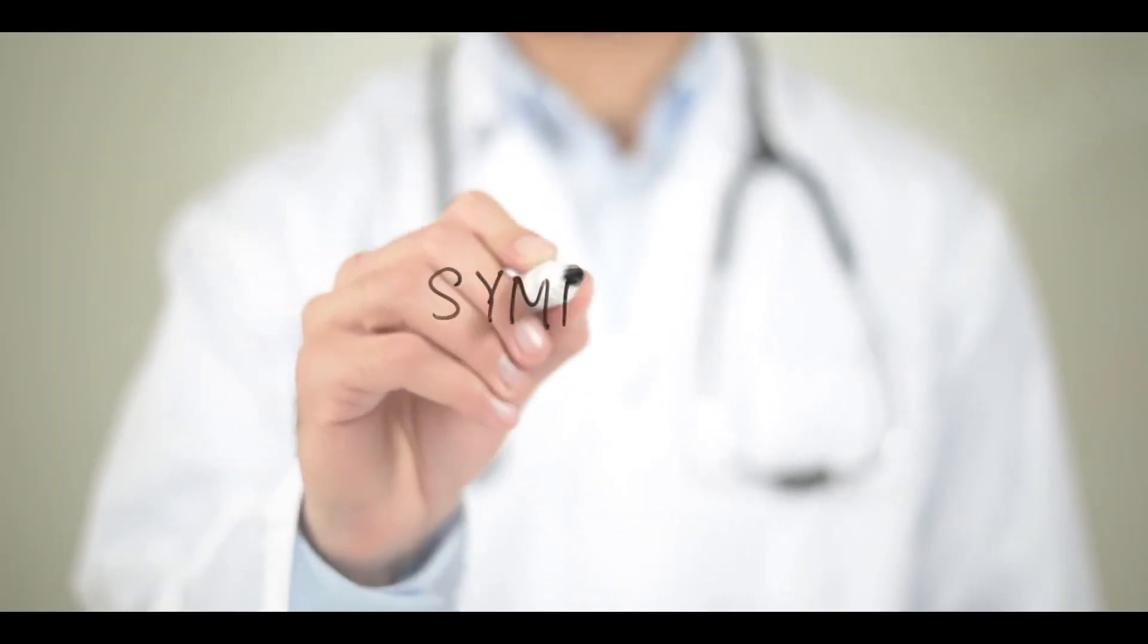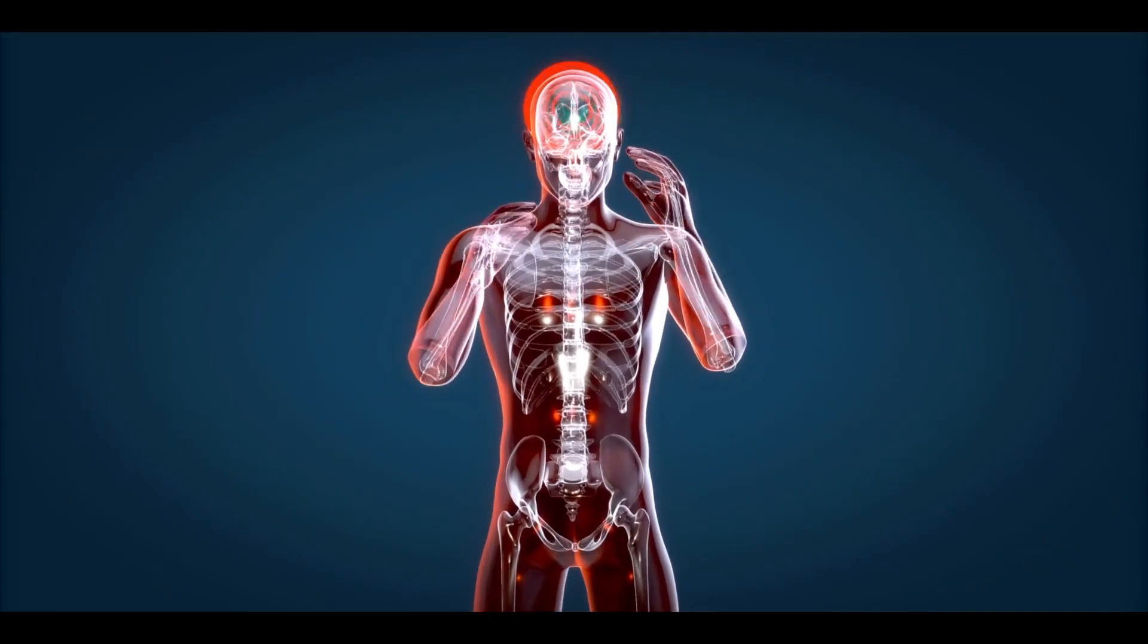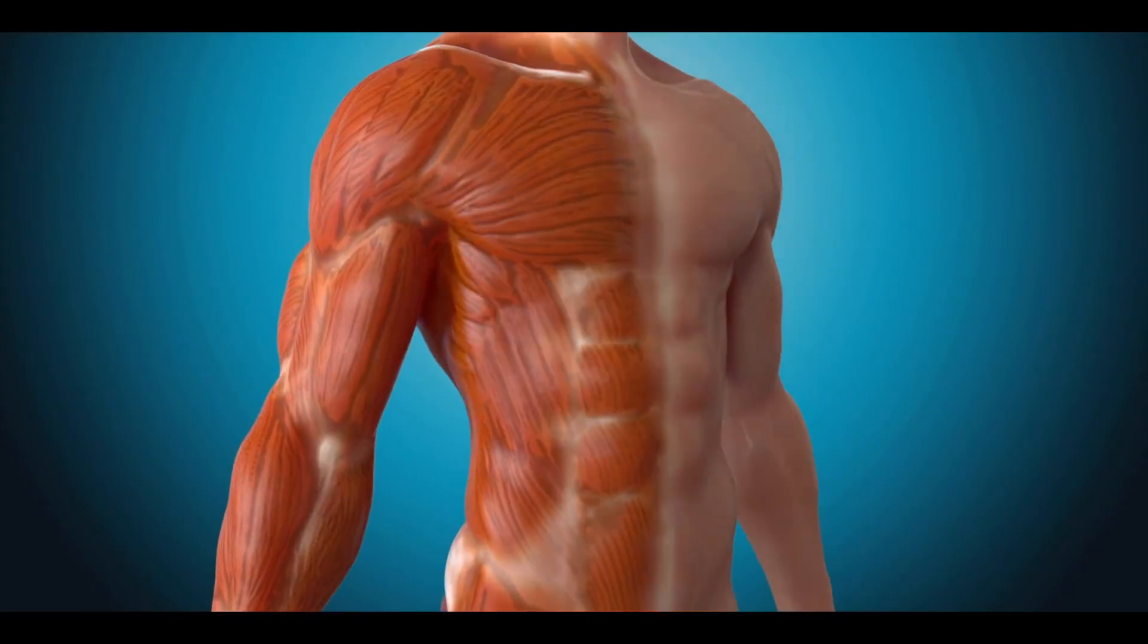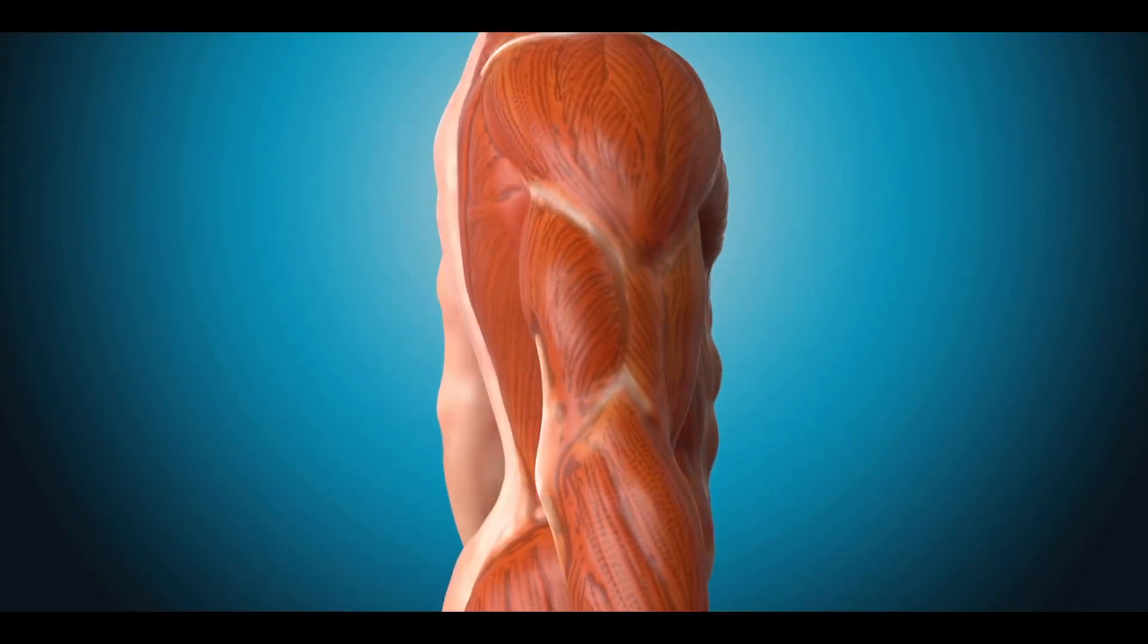If we talk about symptoms of brain hemorrhage, severe pain starts in brain of the affected patient, and vomiting may also occur. Besides, patient feels difficulty in seeing and speaking, alongside imbalanced nerve coordination.